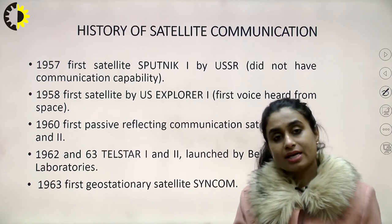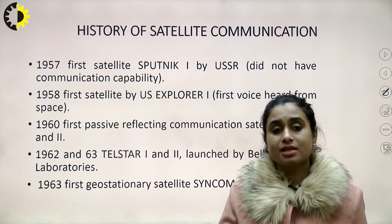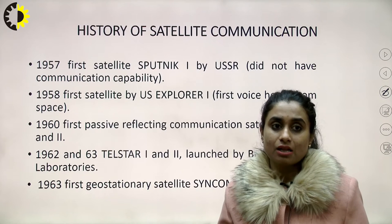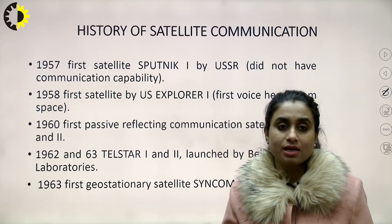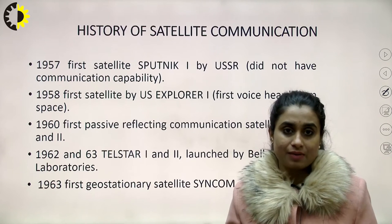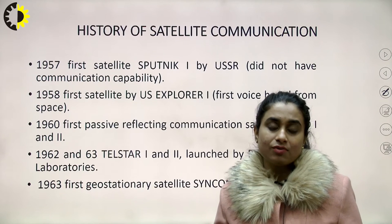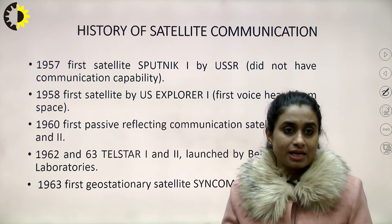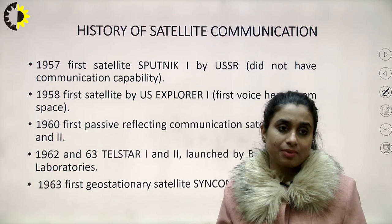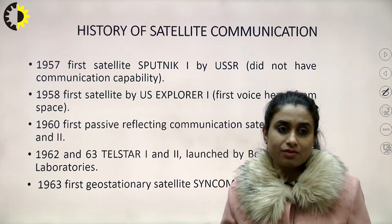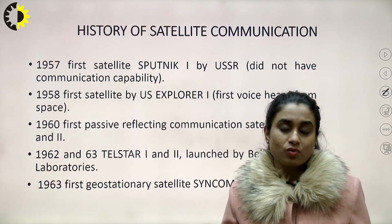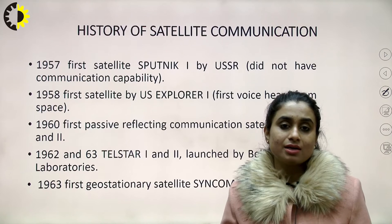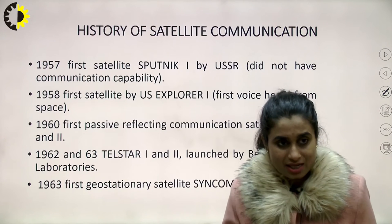If we talk about the history of satellite communication, what was the first thing launched into space? In 1957, the first satellite launched was Sputnik 1, launched by the USSR. Although this was done to see whether we are capable of placing a satellite into a fixed orbit, it didn't have any communication capability. Later in 1958, the first US satellite, Explorer 1, was sent into space, through which we heard human voice for the first time using satellite communication.